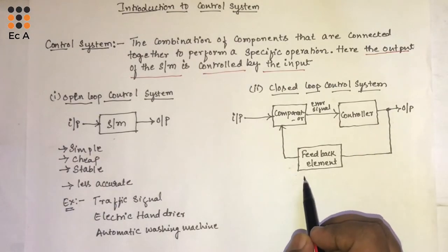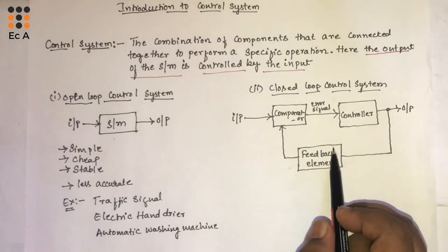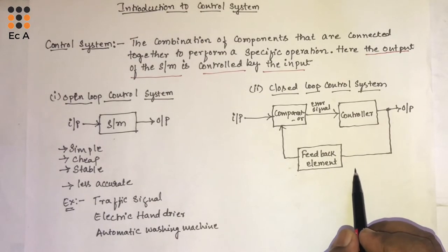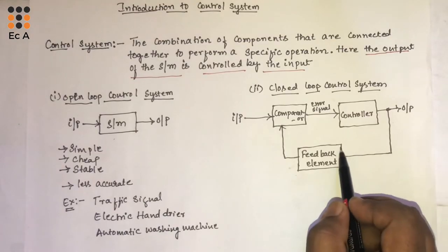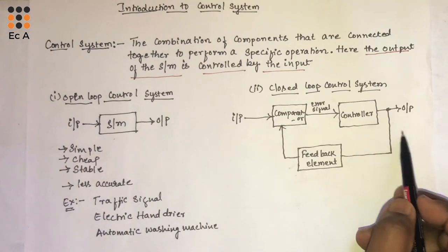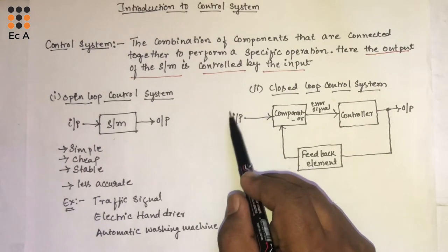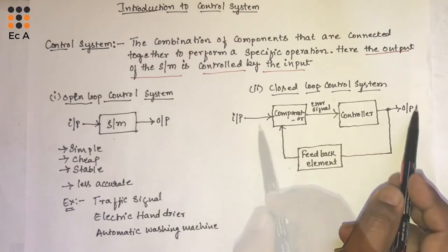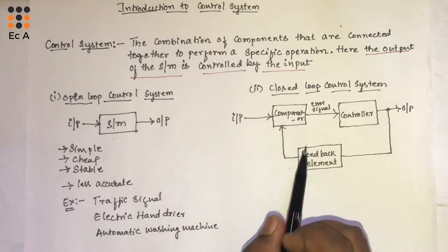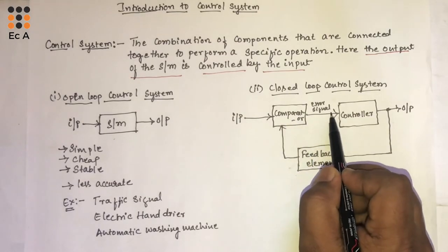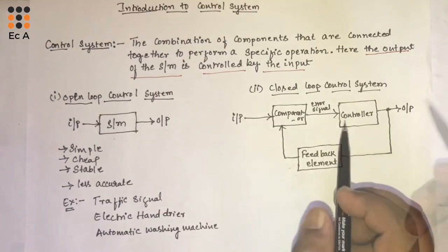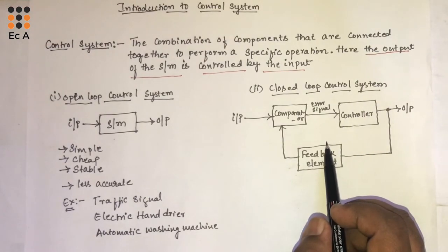This is how the closed loop control system works. For example, consider a room heater whose functionality is to maintain the room temperature. The feedback element monitors the actual temperature output against the desired temperature input. If any change occurs at the output temperature, it is compared by the comparator, and an error signal is given to the controller so that it can vary the output.